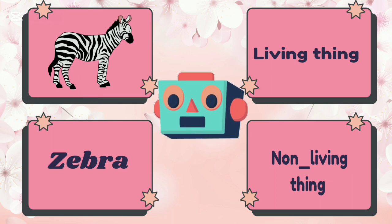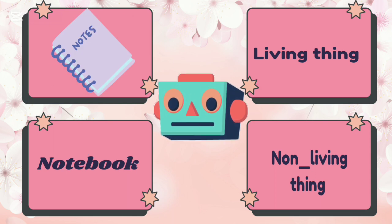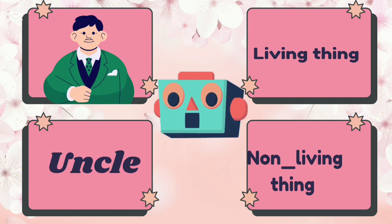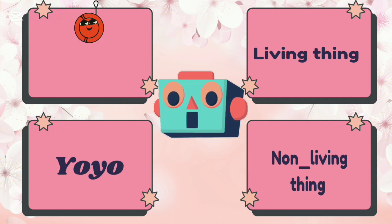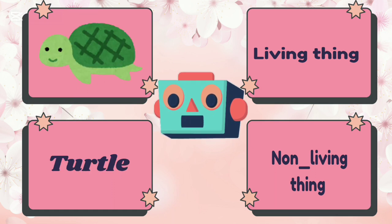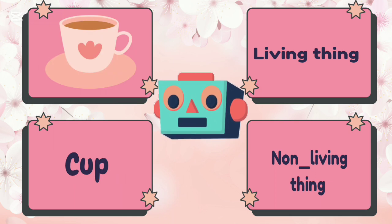Zebra is living thing or non-living thing? Zebra is living thing. Notebook is living thing or non-living thing? Notebook is non-living thing. Uncle is living thing or non-living thing? Uncle is living thing. Yoyo is living thing or non-living thing? Yoyo is non-living thing. Turtle is living thing or non-living thing? Turtle is living thing. Cup is living thing or non-living thing? Cup is non-living thing.